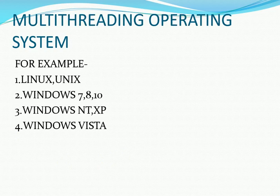And the last is multi threading operating system. Operating systems that allow different parts of a software program to run simultaneously is known as a multi threading operating system. The following are the examples of multi threading operating systems.